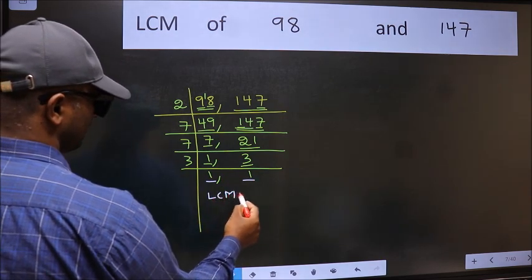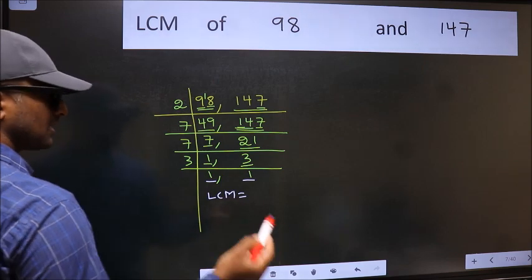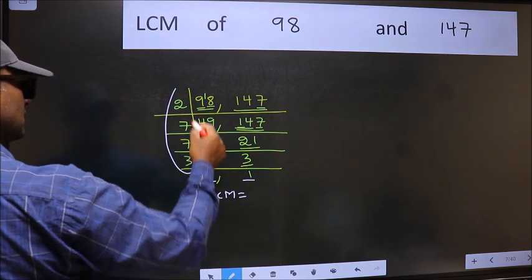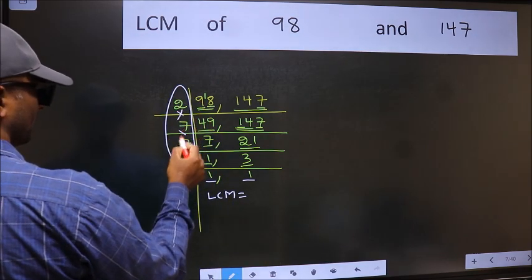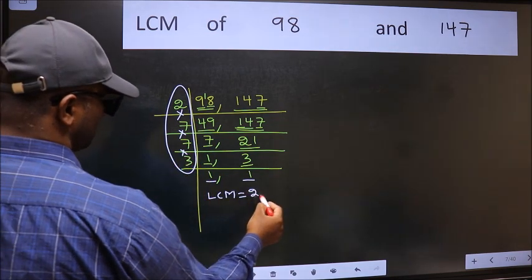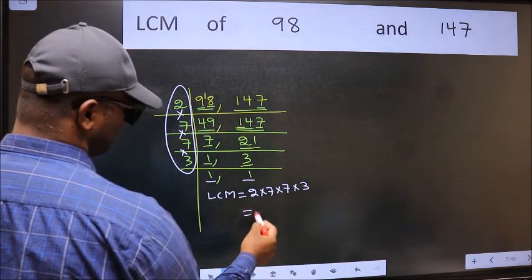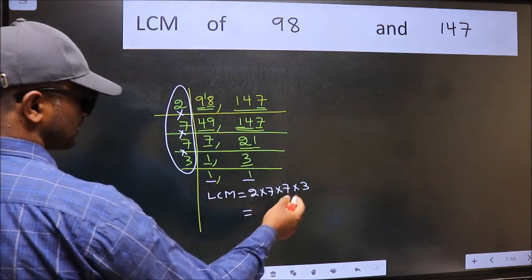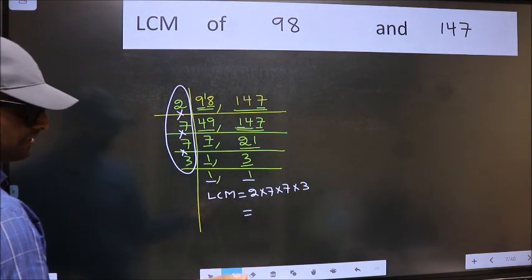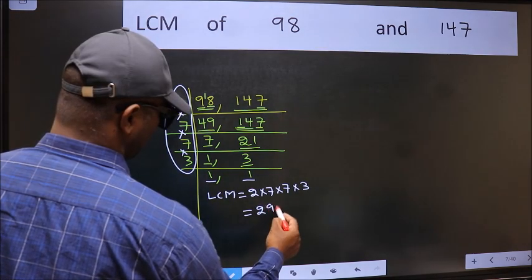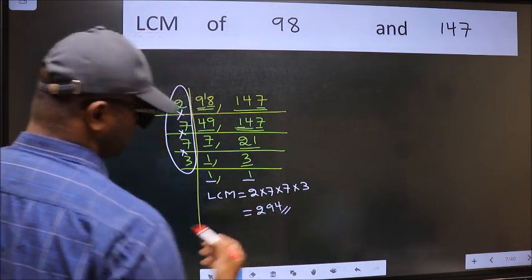So our LCM is the product of these numbers. That is 2 times 7 times 7 times 3. When we multiply these numbers, we get 294 is our LCM.